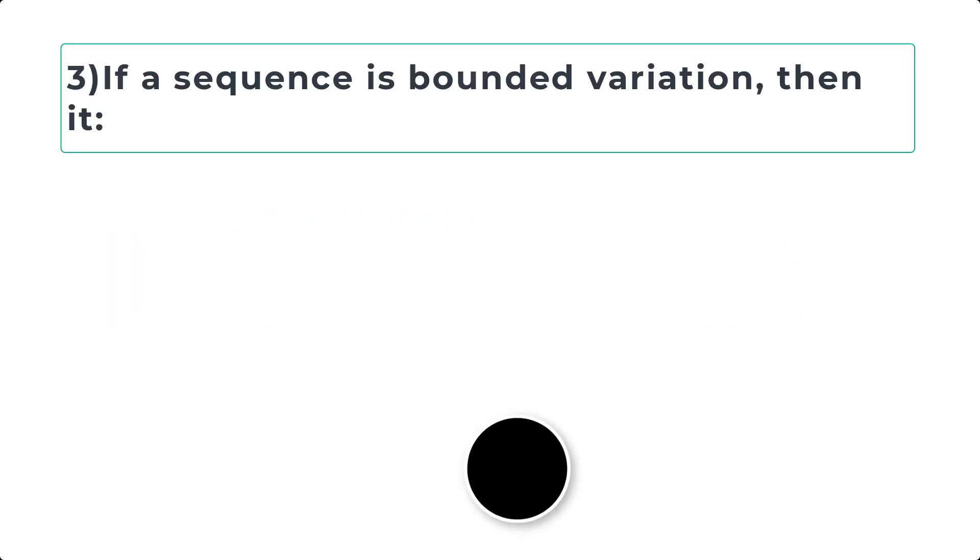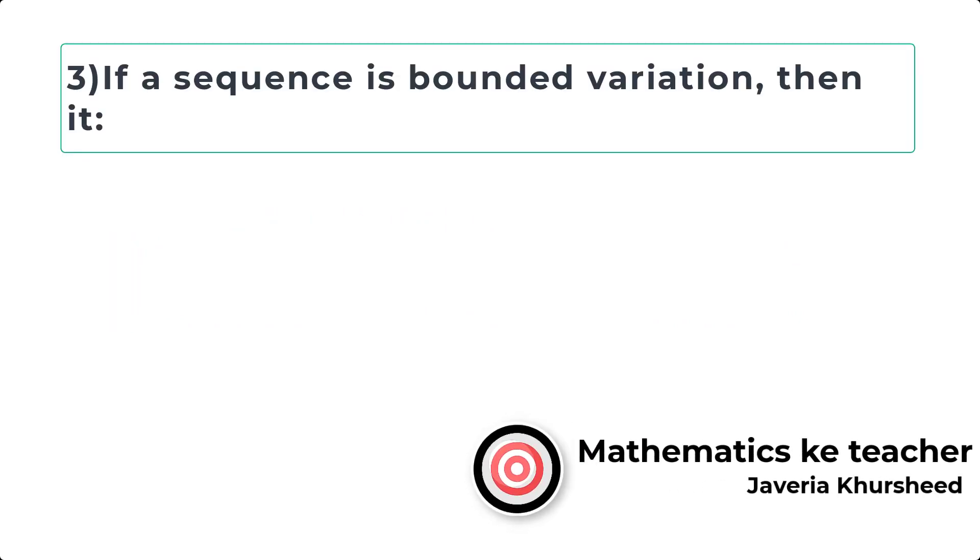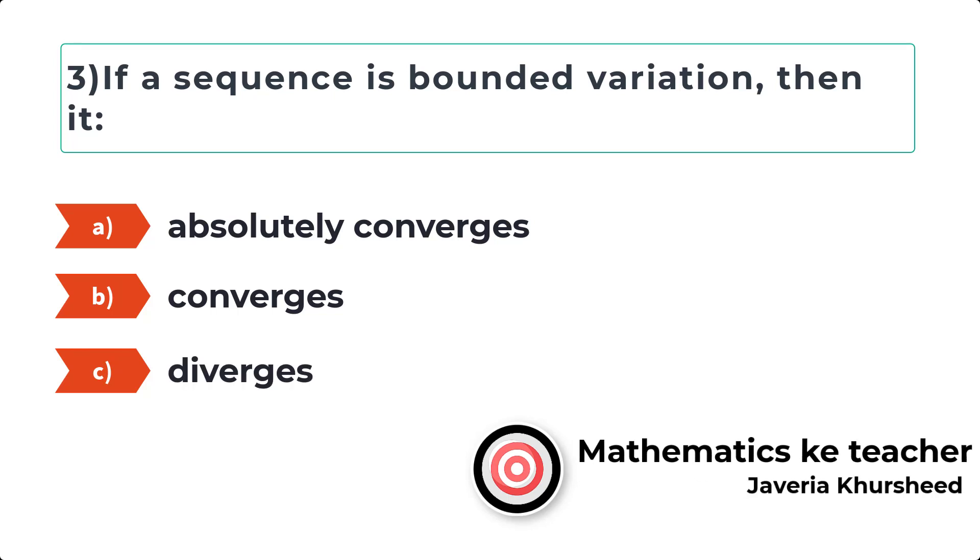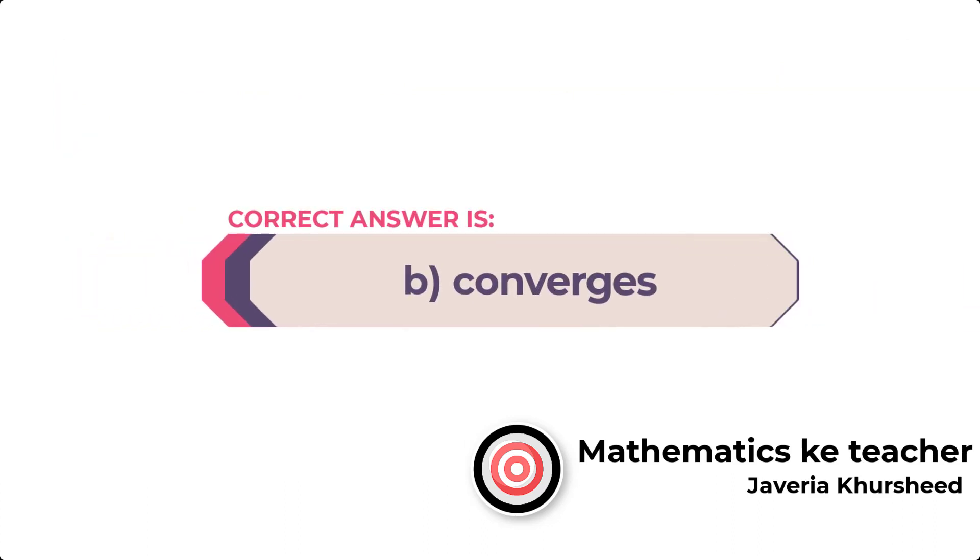Question 3: If a sequence is bounded variation, then it: A) Absolutely converges, B) Converges, C) Diverges, D) None of these. Correct answer is B, converges.